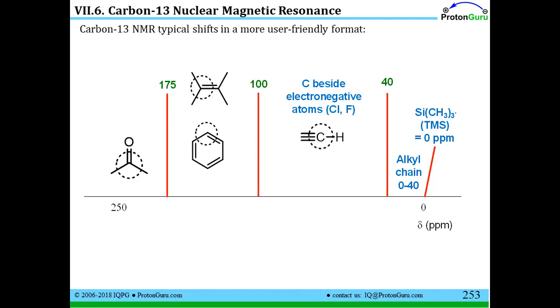So to start off, we have tetramethylsilane. So there should be a 4 there if you can make that correction. Now at the very low end right beside that standard are just alkyl groups, around 0 to 40.